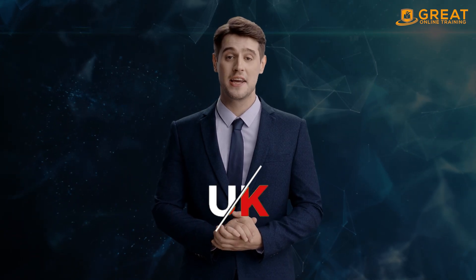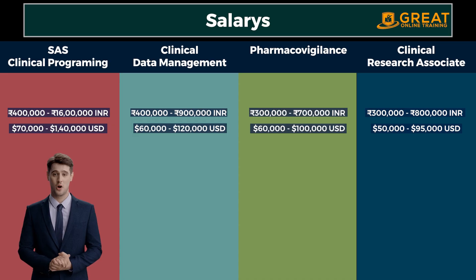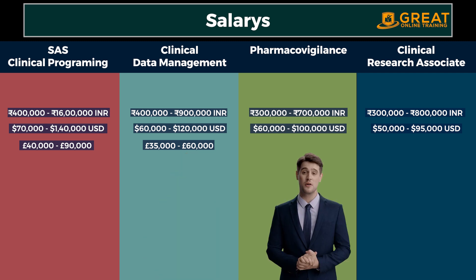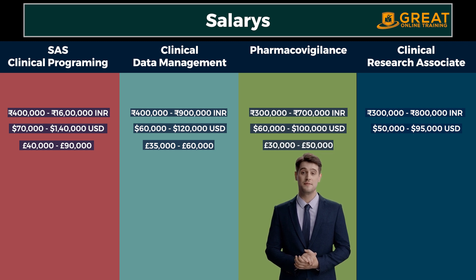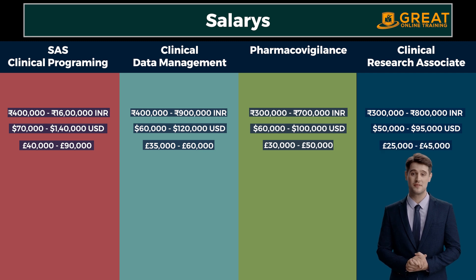Salaries in the UK, in British pounds per year: SAS Clinical Programmer: £40,000 to £90,000. Clinical Data Manager: £35,000 to £60,000. Pharmacovigilance Specialist: £30,000 to £50,000. Clinical Research Associate: £25,000 to £45,000.